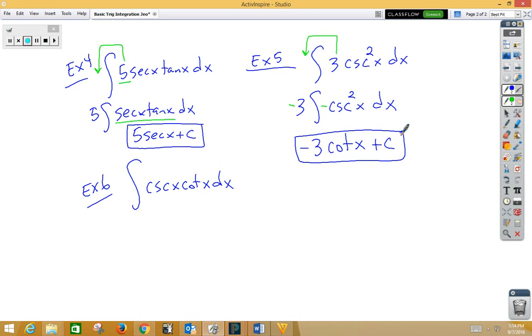In example six, we have cosecant cotangent. Well, the derivative of cosecant is negative cosecant cotangent. So again, if I want to include a negative on the inside, I push a negative on the outside as well to not change the problem. And now we have negative cosecant x plus C.